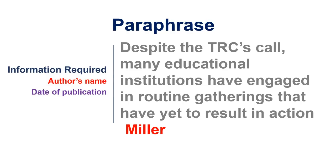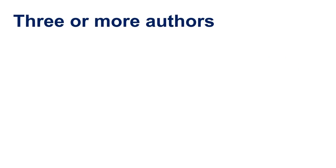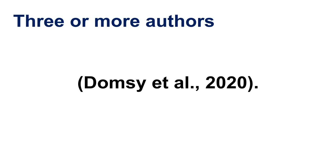For an in-text citation at the end of a paraphrase, add the author's last name, comma, and the date of publication. Surround in parentheses and follow with a period. For two authors, separate each author's last name with an ampersand. Three or more authors can be cited in text by listing the first author's last name and following it with et al. and a period, which means 'and others.'